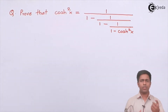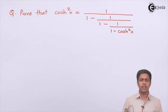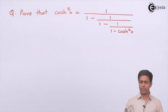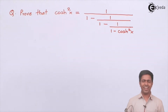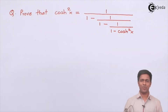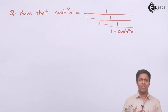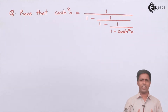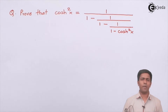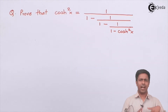Hey students, now we are going to solve a numerical based on hyperbolic functions. Here we have to prove that hyperbolic cos square x is equal to 1 upon 1 minus 1 upon 1 minus 1 upon 1 minus hyperbolic cos square x. It looks very funny with all those nested fractions, and you may be seeing this for the first time. But once I tell you the solution, you'll say it's so simple — we just apply the formulas of hyperbolic functions.